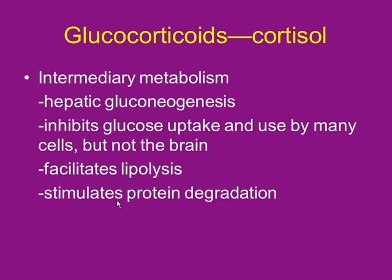Glucocorticoids and cortisol have the most material. Cortisol controls intermediary metabolism — regulating fat, protein, and carbohydrate metabolism. The first physiological effect is hepatic gluconeogenesis: the liver creates brand new sugars and pushes them into the blood. Cortisol is a stress hormone, and it pushes sugar into the blood to help your brain think faster and get you out of a bad situation. It also inhibits glucose uptake by most cells — but not the brain.